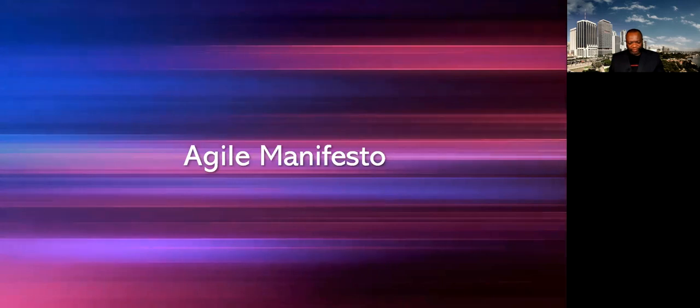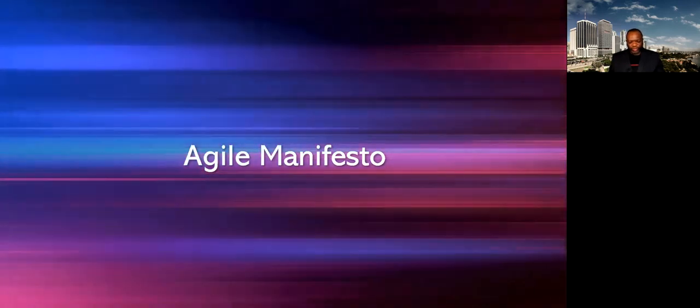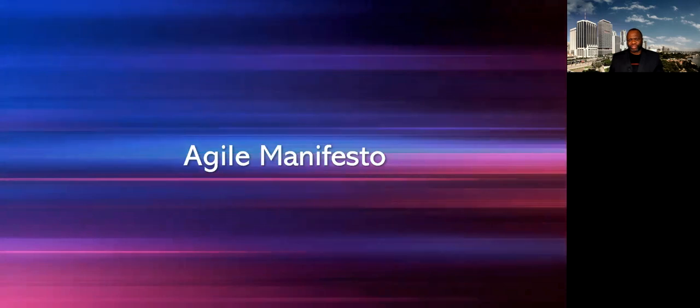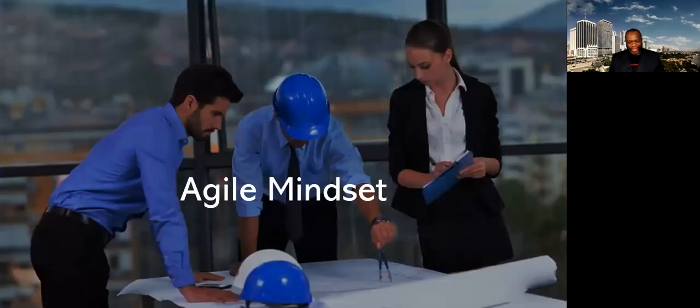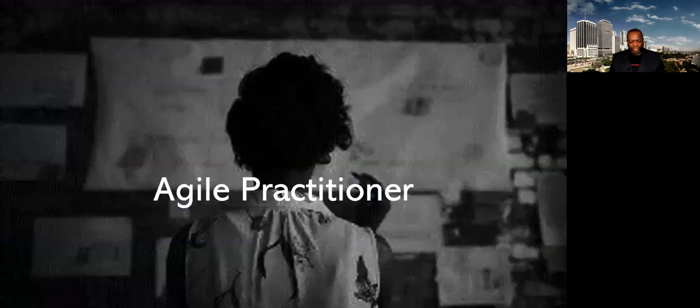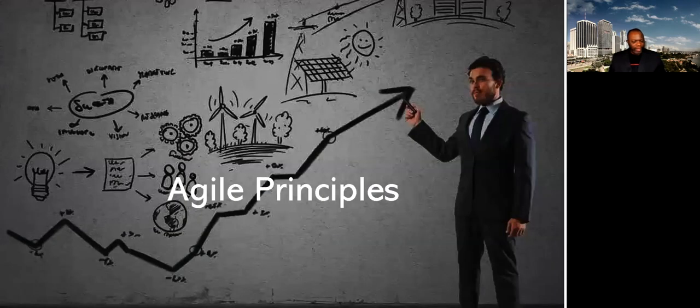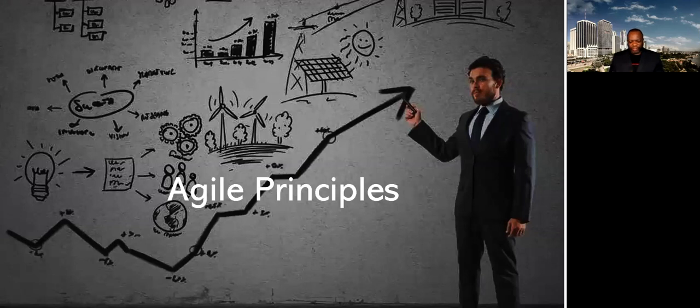The next term is Agile lifecycle. It's an approach that is both iterative and incremental to refine work items and deliver frequently. The next term is the Agile Manifesto. This is the original and official definition of Agile values and the 12 principles. Agile mindset. It's a way of thinking and behaving. The Agile mindset embodies a focus on customers, teams, and those operating within that network.